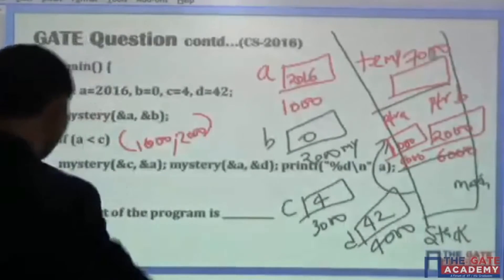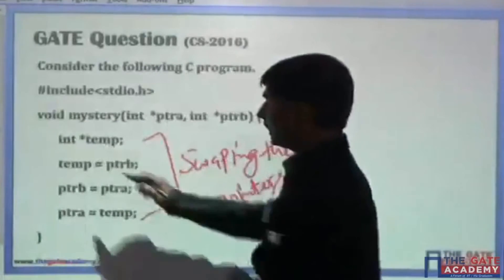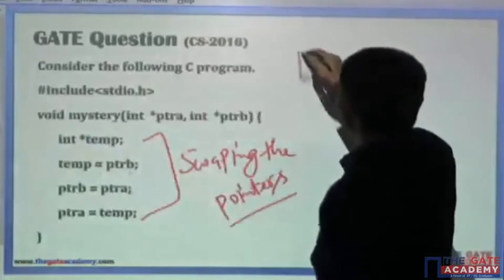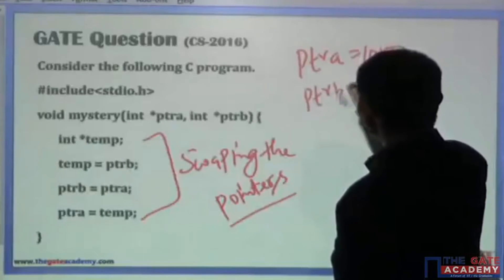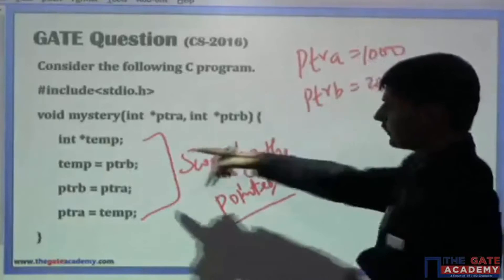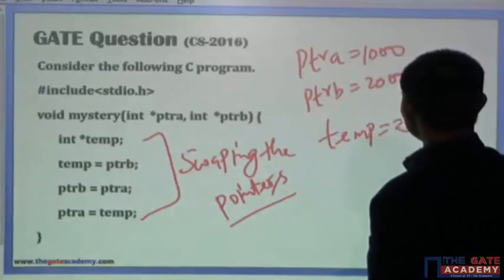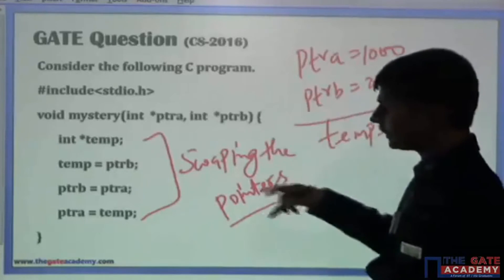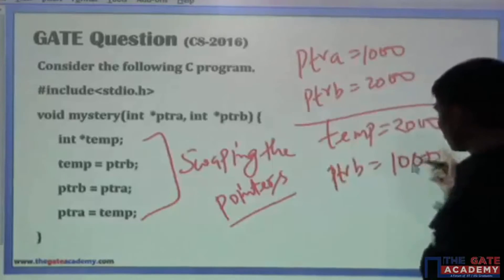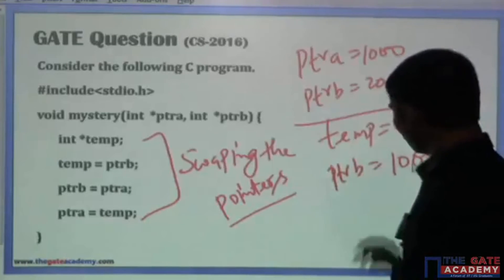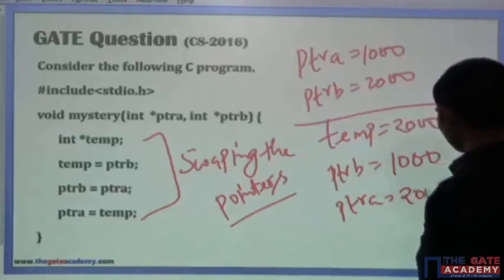The first statement says temp equals ptrB. Since ptrB holds 2000, temp becomes 2000. Then ptrB equals ptrA: since ptrA holds 1000, ptrB now holds 1000. Then ptrA equals temp: since temp holds 2000, ptrA becomes 2000. These three statements perform the swap of the local pointer values.